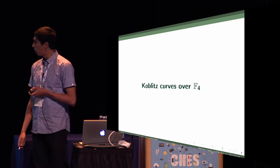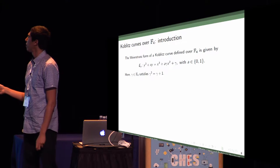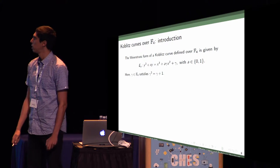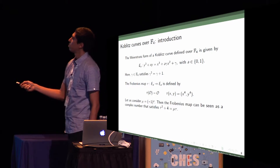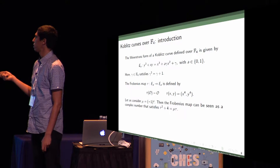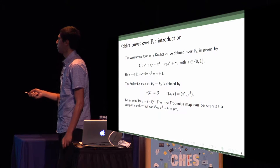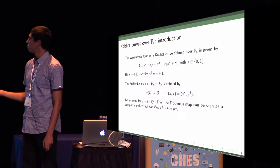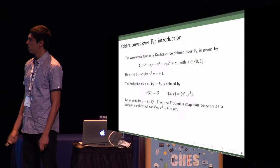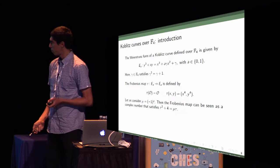Let's see the Koblitz curves over F4. This is the form of the curve. We have A equals 0 or 1 again. And we have to choose gamma in F4 which satisfies gamma squared equals gamma plus 1. Now the Frobenius map is defined like this. Instead of one squaring, you have to perform two consecutive squarings in each coordinate of an affine or projective point. Let's consider mu equals minus 1 to the power of A. The Frobenius map can be seen as a complex number which satisfies this equation.